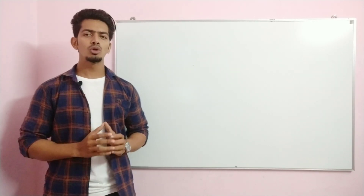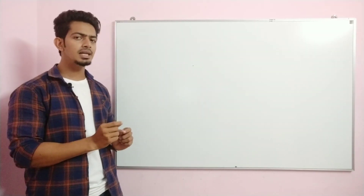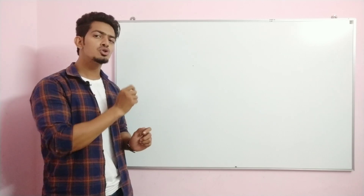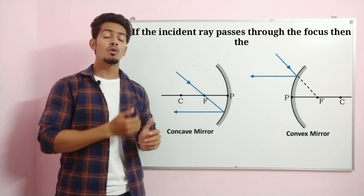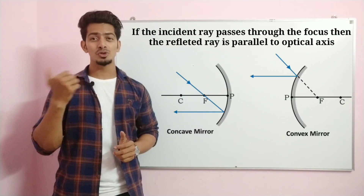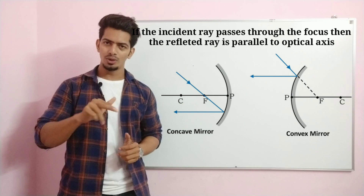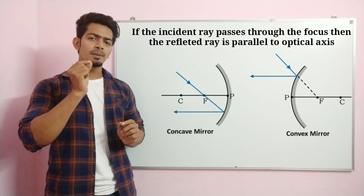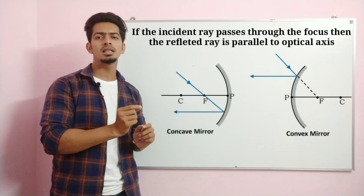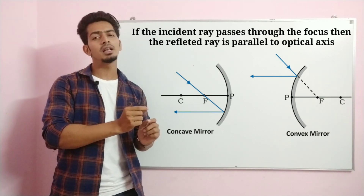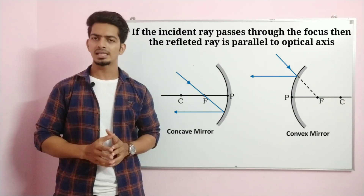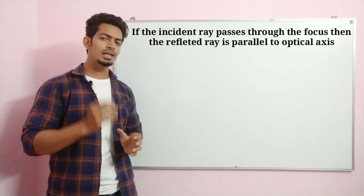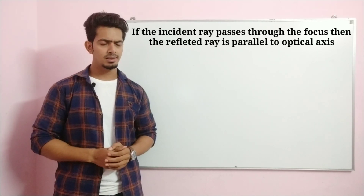Rule 2: if the incident ray passes through the focus, then the reflected ray will be parallel to the principal axis or optical axis.